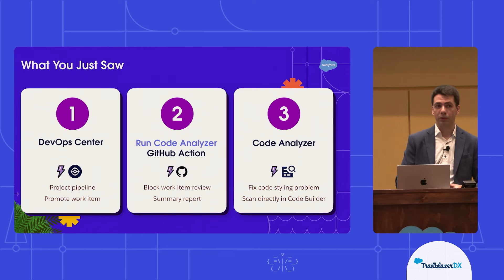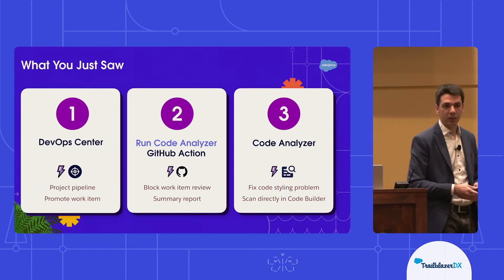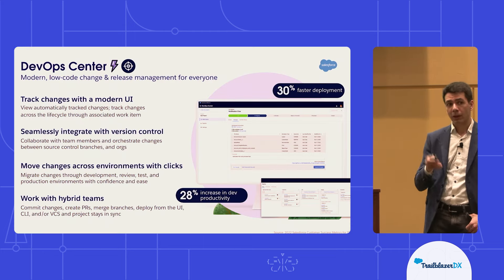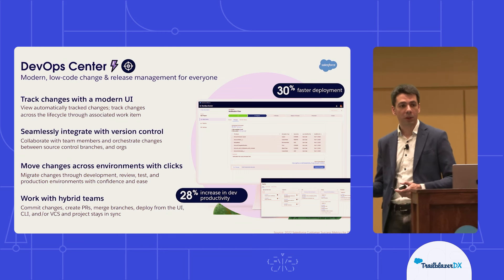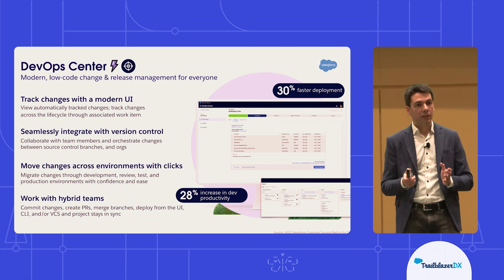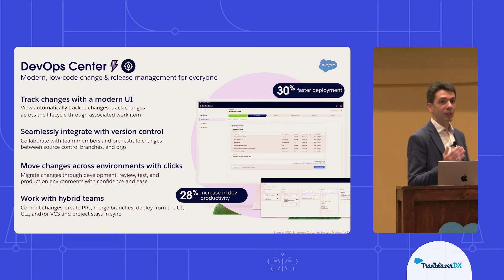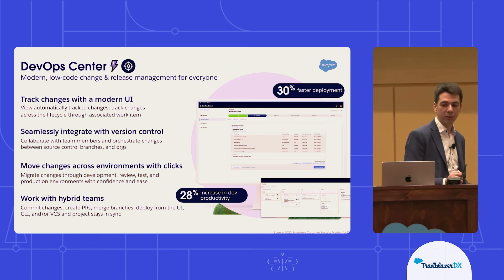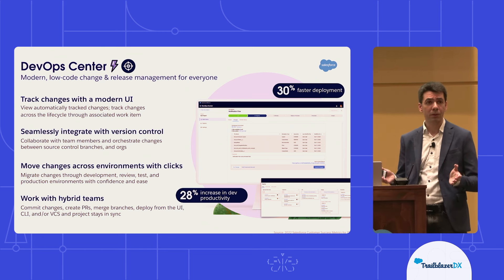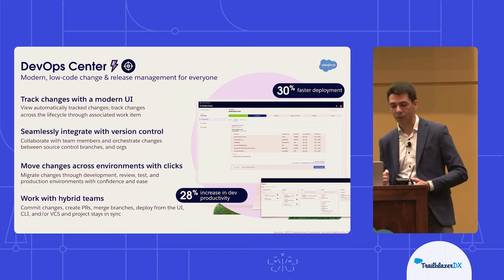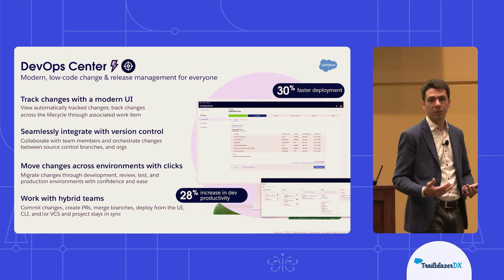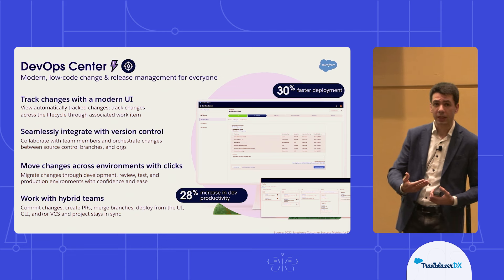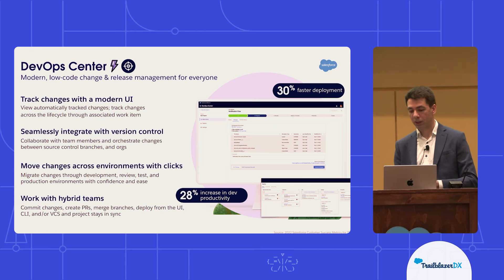The GitHub Action also provides a summary report that can be easily used to ensure my code is fit for purpose and I can easily identify where the issue that I need to fix might be. I also used Code Analyzer within Code Builder to fix the code styling problem. As Code Analyzer is available in all of the core developer experiences at Salesforce, I can easily use it throughout my entire development workflow. We looked at DevOps Center, our tool to manage change and release management for all Salesforce developers, enabling you through a modern UI to track these changes. It can also integrate easily with GitHub, allowing you to leverage advanced features such as GitHub workflows, GitHub Actions, and ultimately integrated tools such as Salesforce Code Analyzer and many others available in the GitHub marketplace.